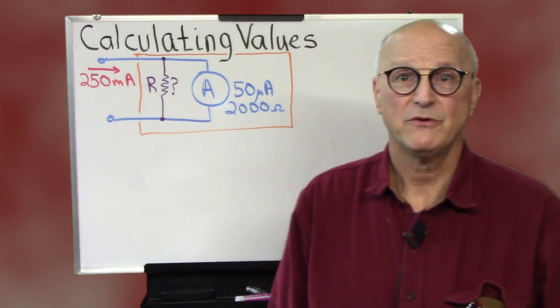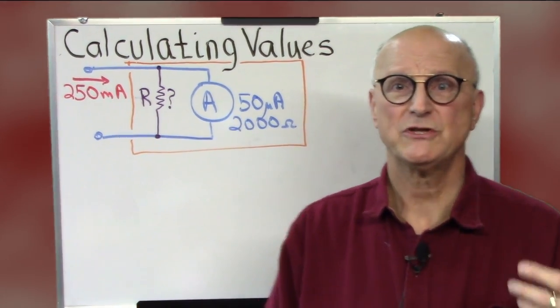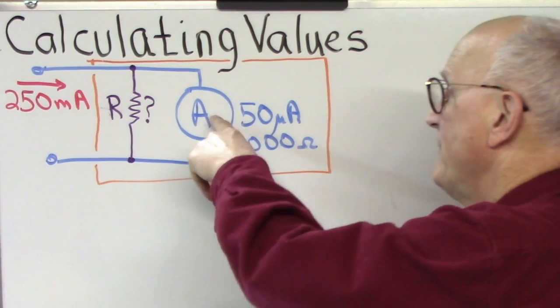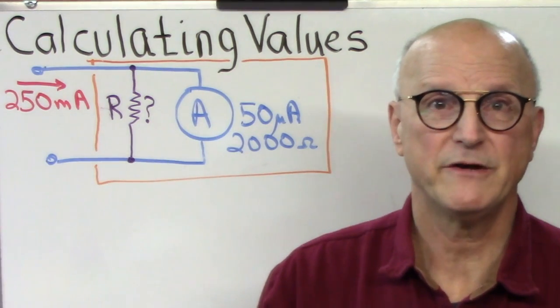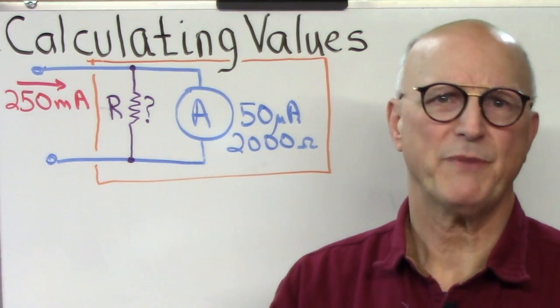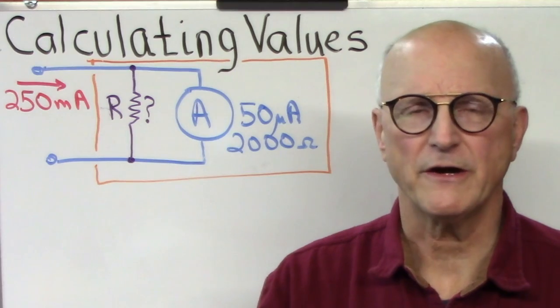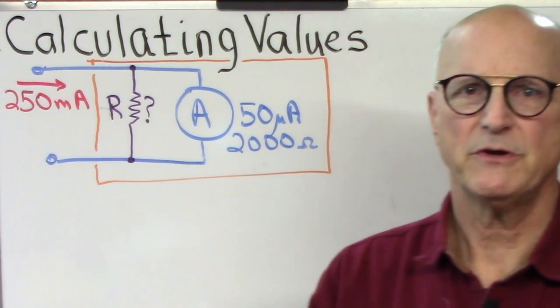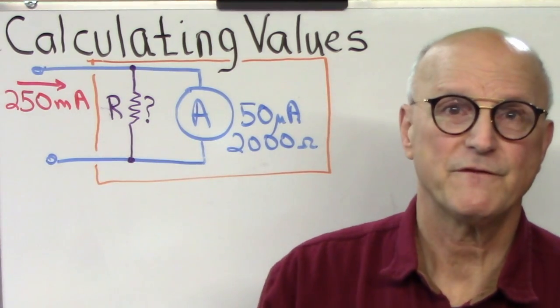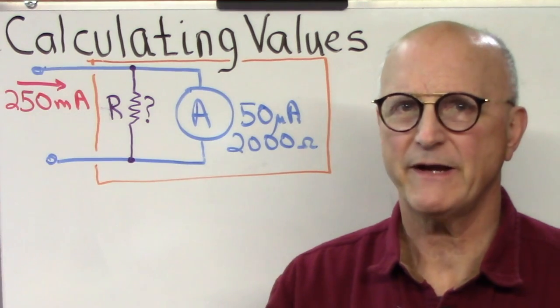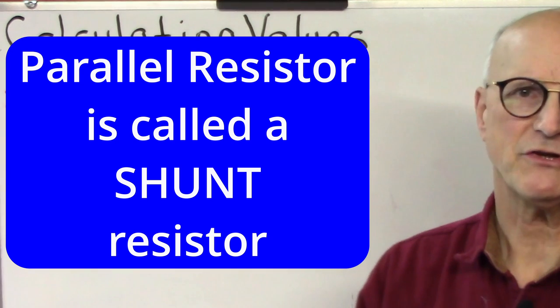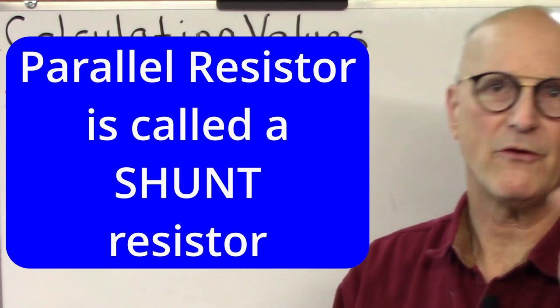The object of what we're going to be doing is to set things up so that when 250 milliamps is flowing through our ammeter box, only 50 microamps is flowing through our analog meter movement. The foundation of this design lay in the fact that when we have resistors in parallel they share the current. So what we want to do is put a resistor in parallel with our 50 microamp meter movement that will have 250 milliamps minus the 50 microamps running through it. This parallel resistor is called a shunt resistor because it shunts current around the meter movement.